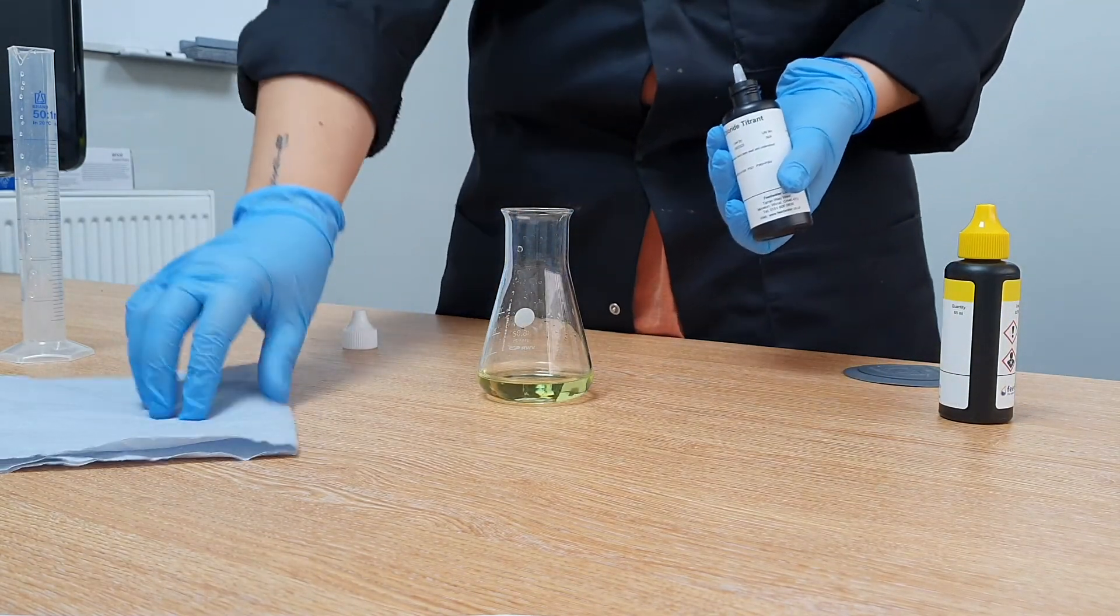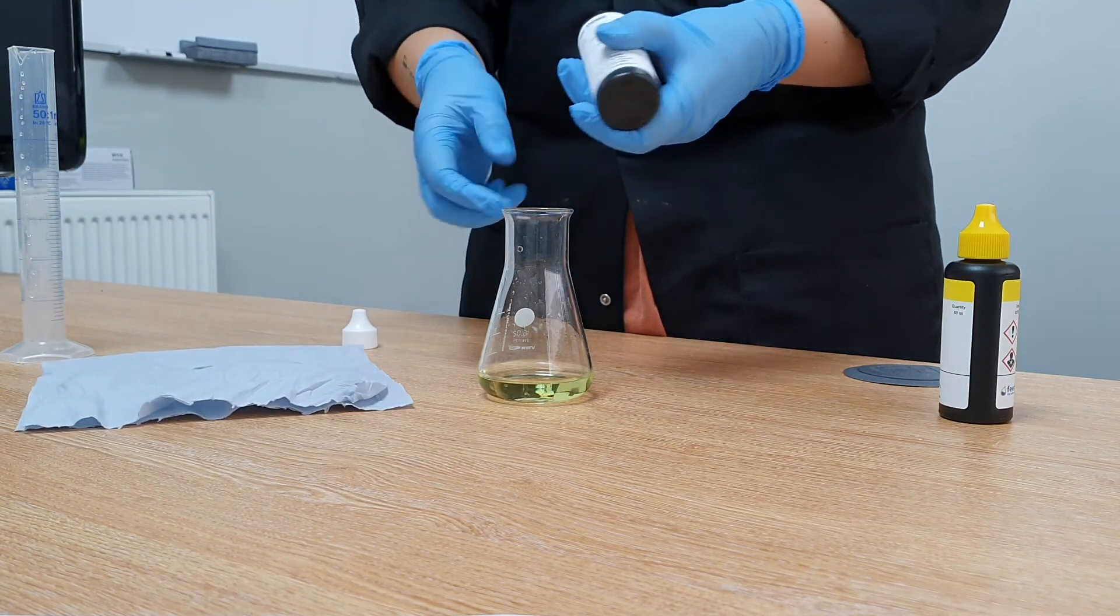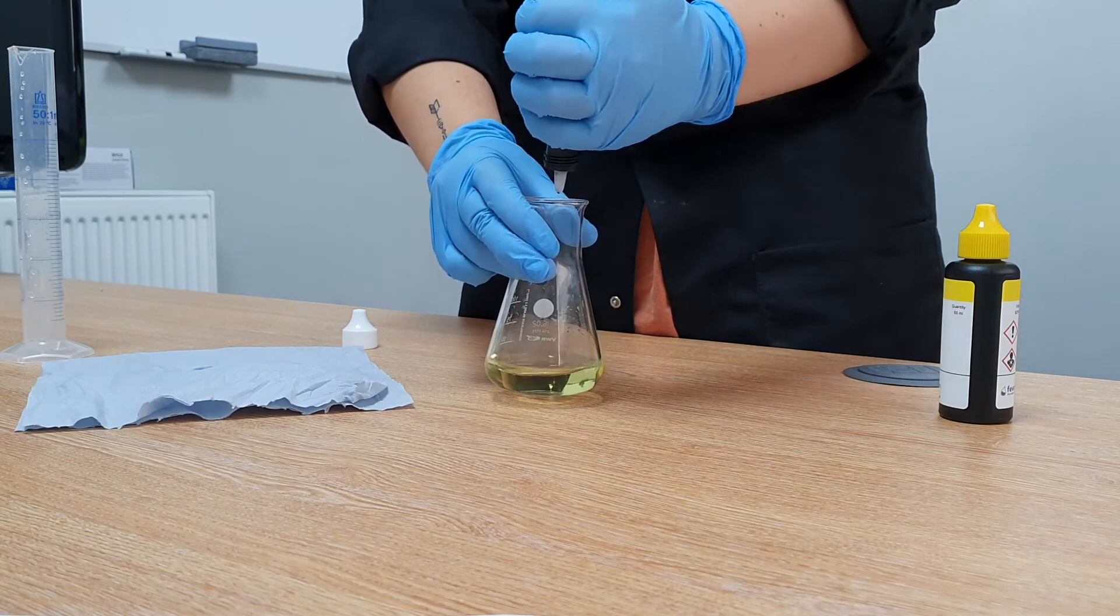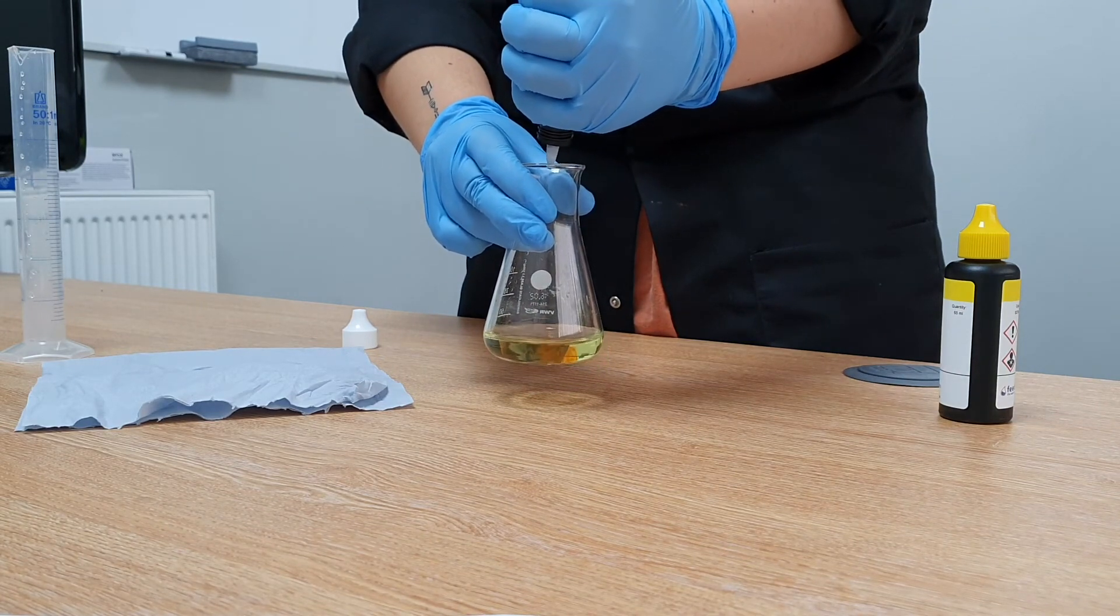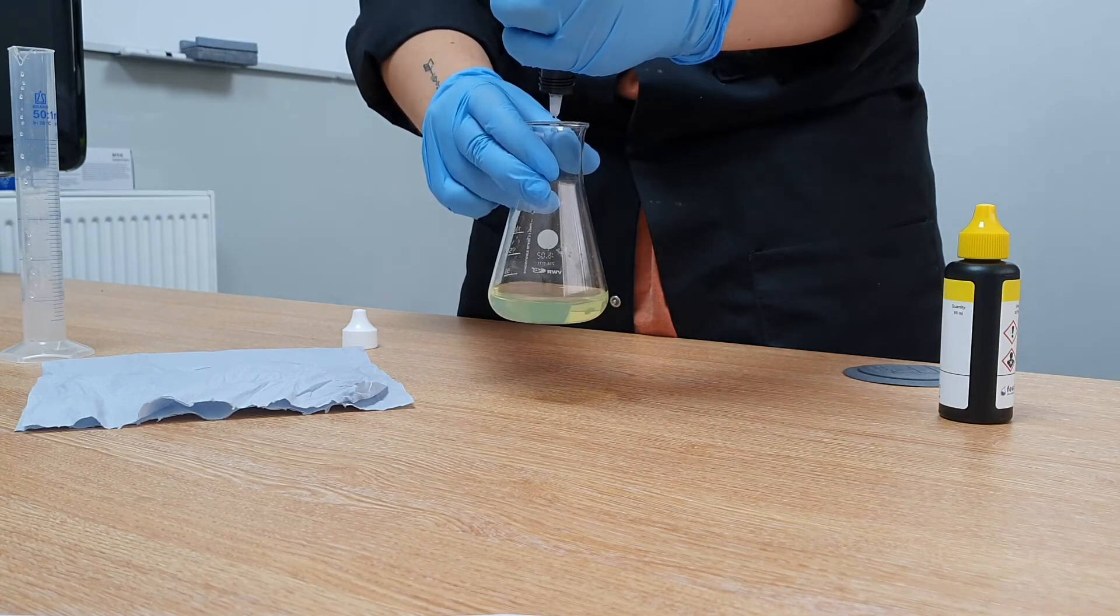Moisten and wipe the tip of the chloride titrant dropper to ensure it is clean and then add it one drop at a time to the sample counting the number of drops until the colour changes yellow to the first orange or red colouration visible.